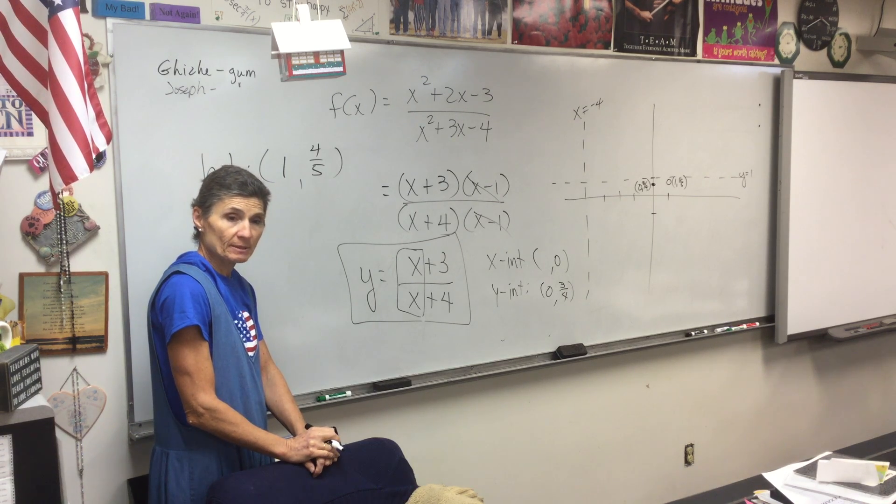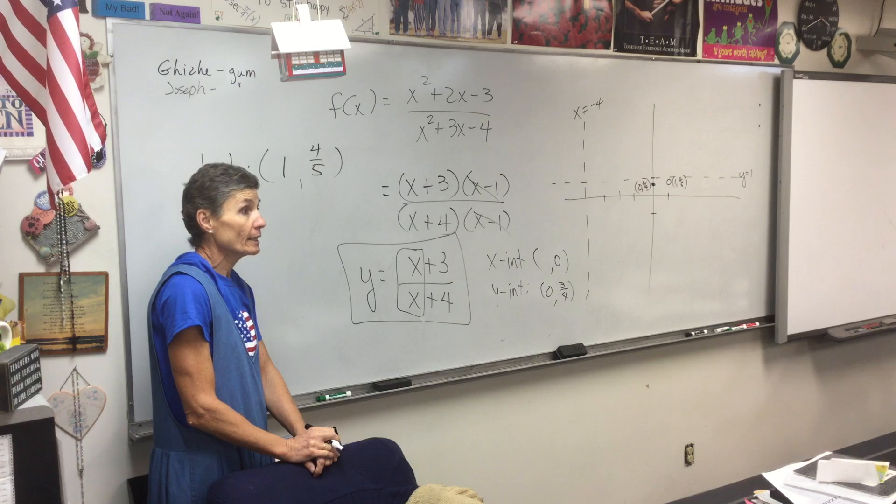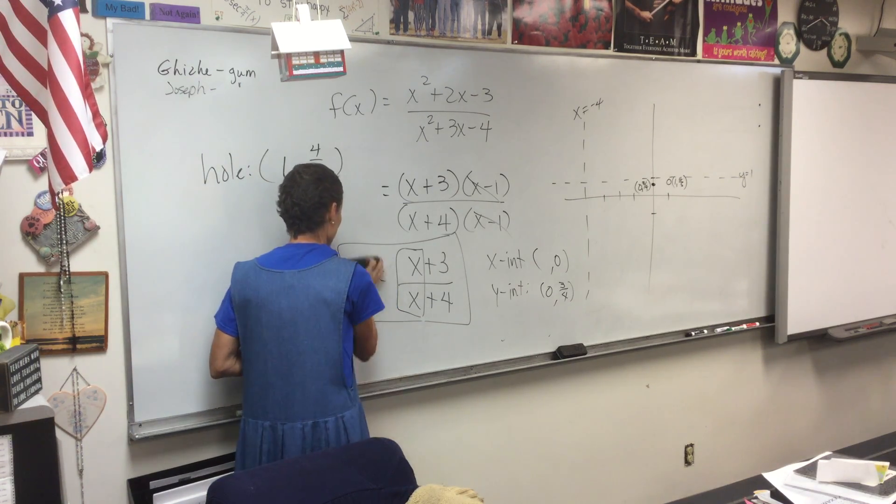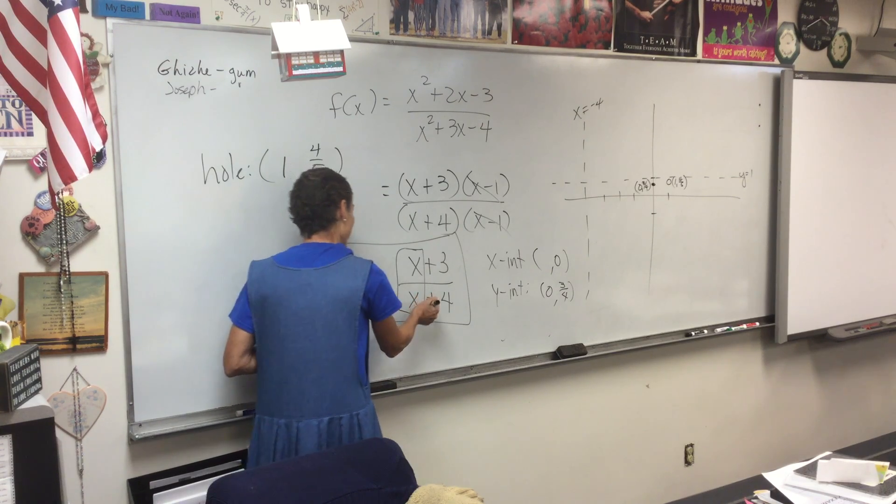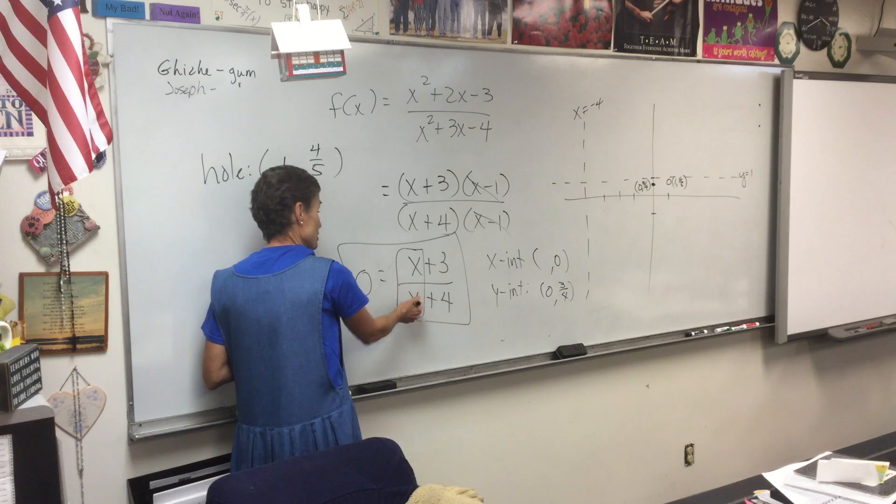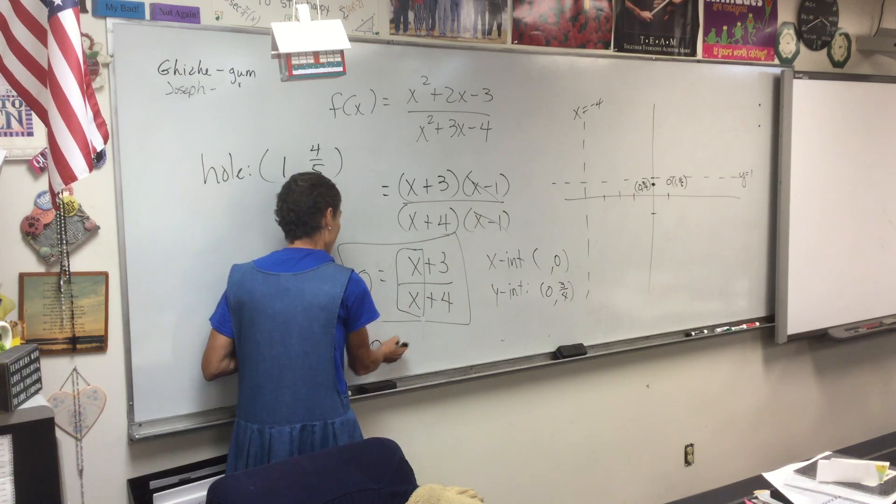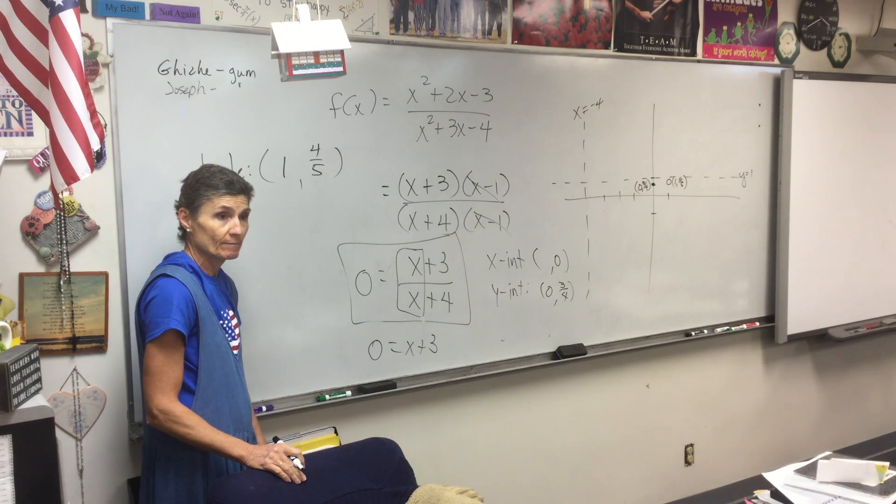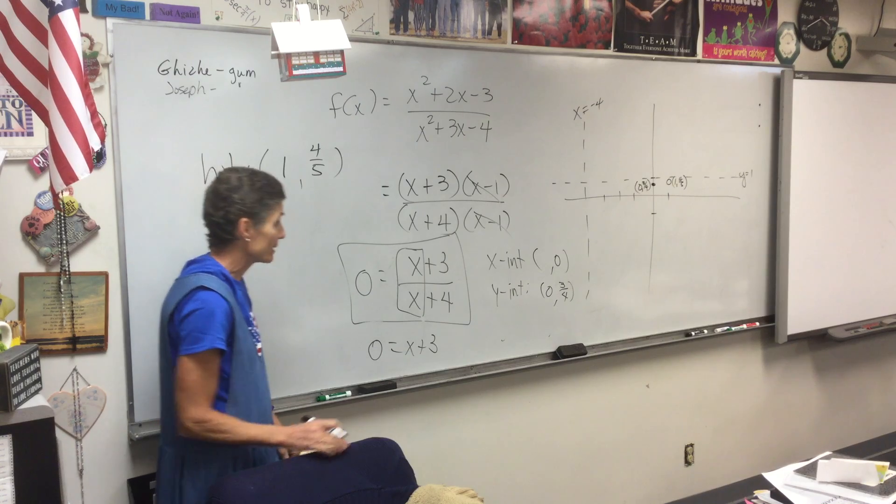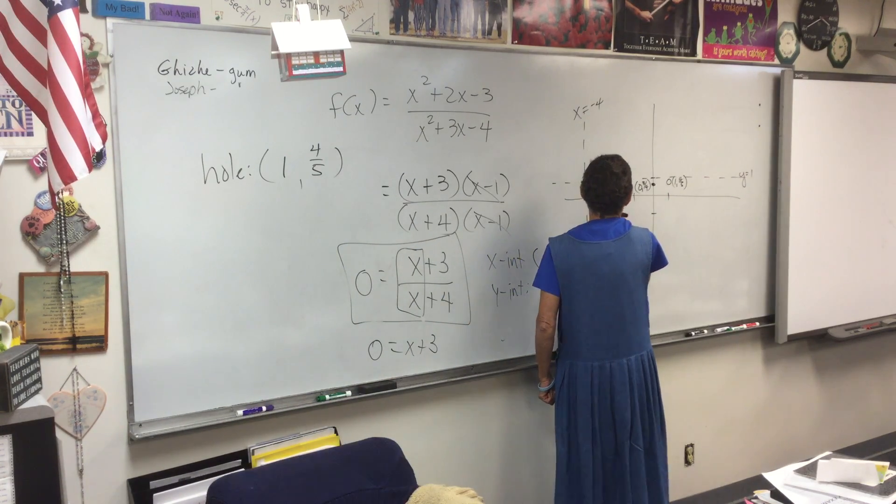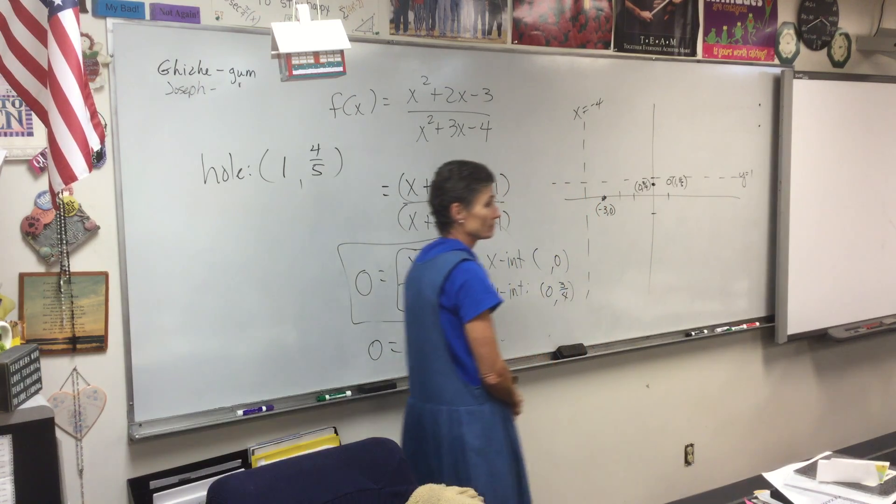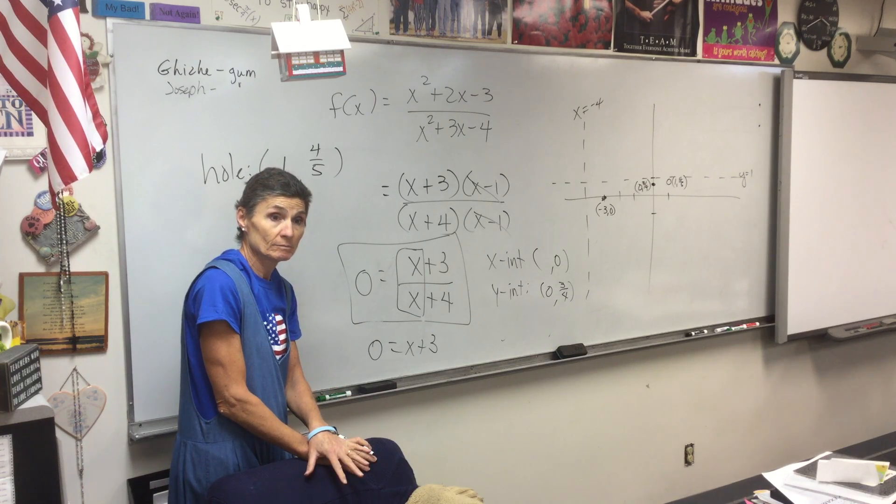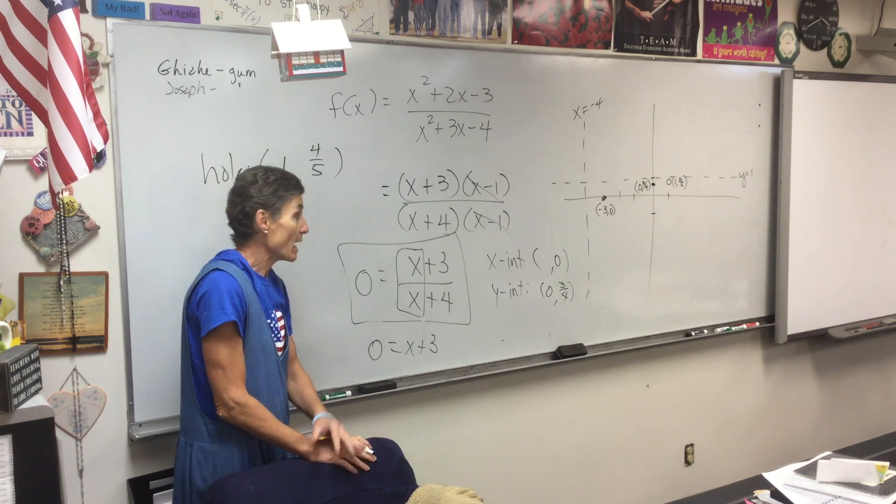How do I find my x intercepts? I let y be zero. If you put a zero here and you multiply this over to here, it just disappears because when you multiply by zero it stays zero. So you end up solving the numerator. Where is your x intercept? Negative three.